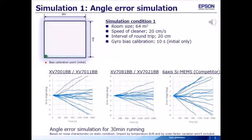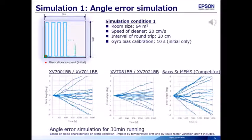This page shows the angle error simulation for 30 minutes continuously running robot vacuum cleaner. Simulation conditions are: room size is 8 meters square, speed of robot vacuum cleaner is 20 centimeters per second, interval of round trip is 20 centimeters. Gyro bias calibration is 10 seconds before running only. This simulation is based on noise characteristic on static condition.